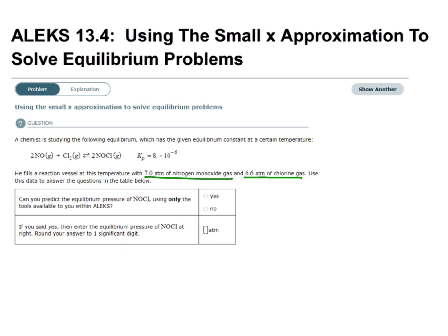Since they're asking us about equilibrium pressure but they've only given us initial pressure, we're going to have to set up an ICE table. For NO, our initial pressure is 7.0. For Cl2, our initial pressure is 6.6. And since they didn't give us any information about NOCl, we have to assume that's 0.